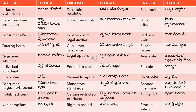However, 'restricted' cannot be translated the same as 'nishaydhinchabadini'. 'Certain restricted products' is translated as 'konni parimitam cheyabadina utpattulu' — 'parimitam' means restricted. Whereas 'nishaydhinchabadindi' means prohibited. So 'konni parimitam cheyabadina utpattulu' means certain restricted products.